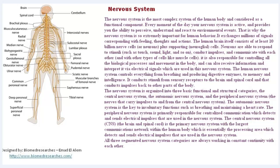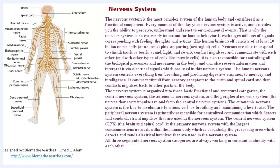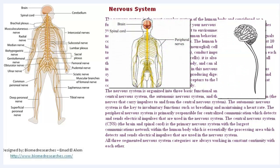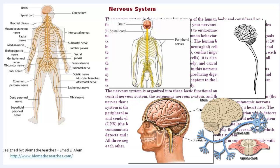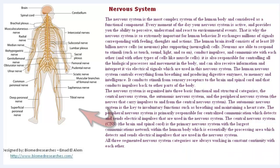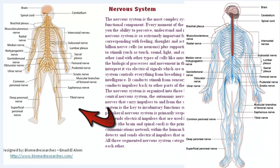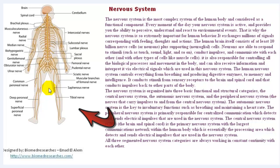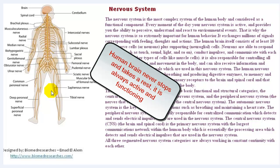Before we go further and talk more about EEG, I will concentrate, as I said earlier, on the parts and organs on the physiological side of the human body which are responsible for generating the EEG signal acquired during the EEG test. So firstly, let us talk about the nervous system. The nervous system is the most complex system of the human body, considered as a functional component. Every movement of the day, our nervous system will be active, and it provides the ability to perceive, understand, and react to environmental events. That is why the nervous system is so extremely important for human behavior.